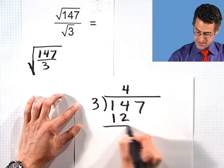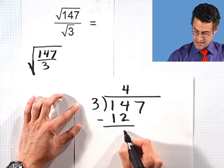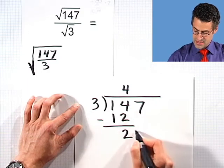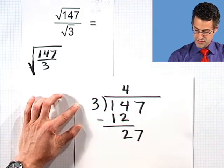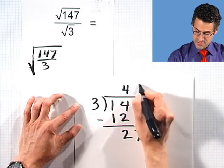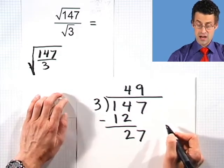So 3 goes into 14, 4 times, 4 times 3 is 12. When I subtract, I get a 2. I bring down the 7. And so 3 goes into 27 9 times. And so what I see is 49.